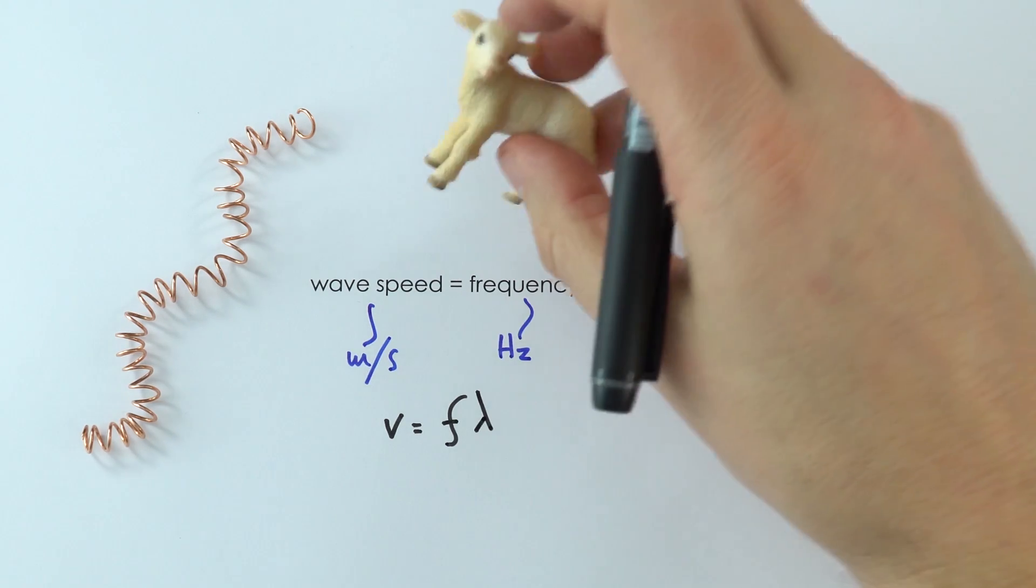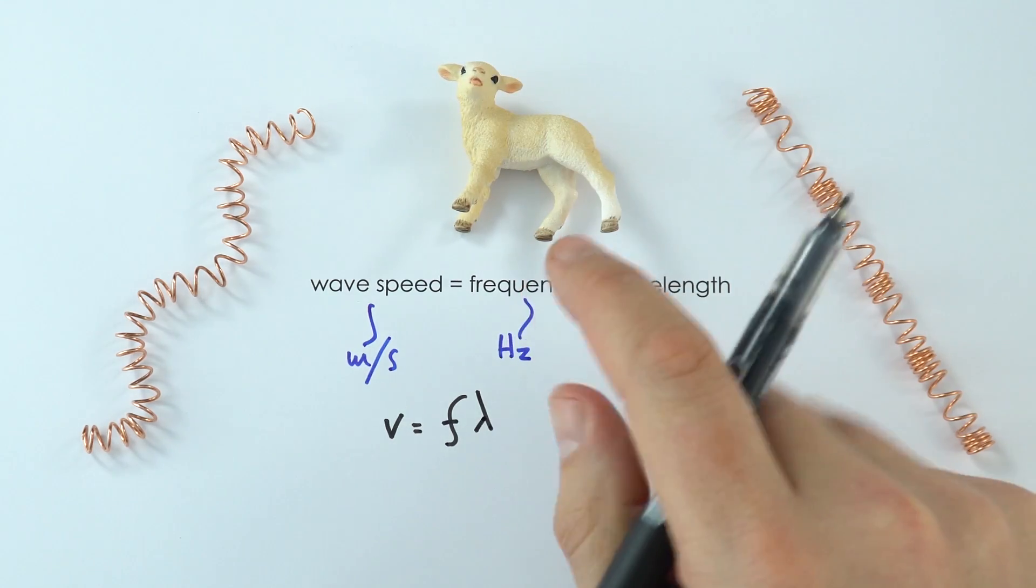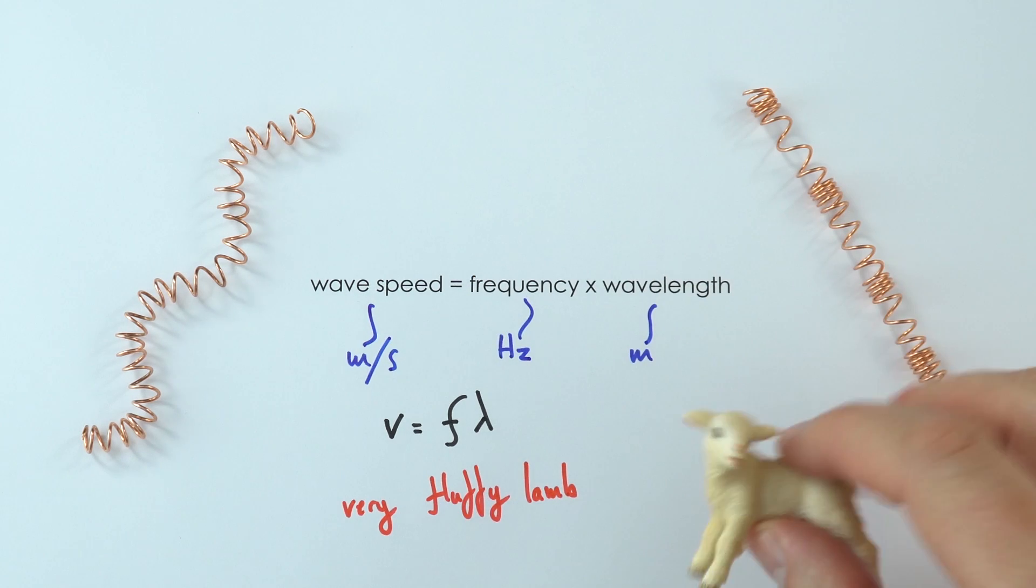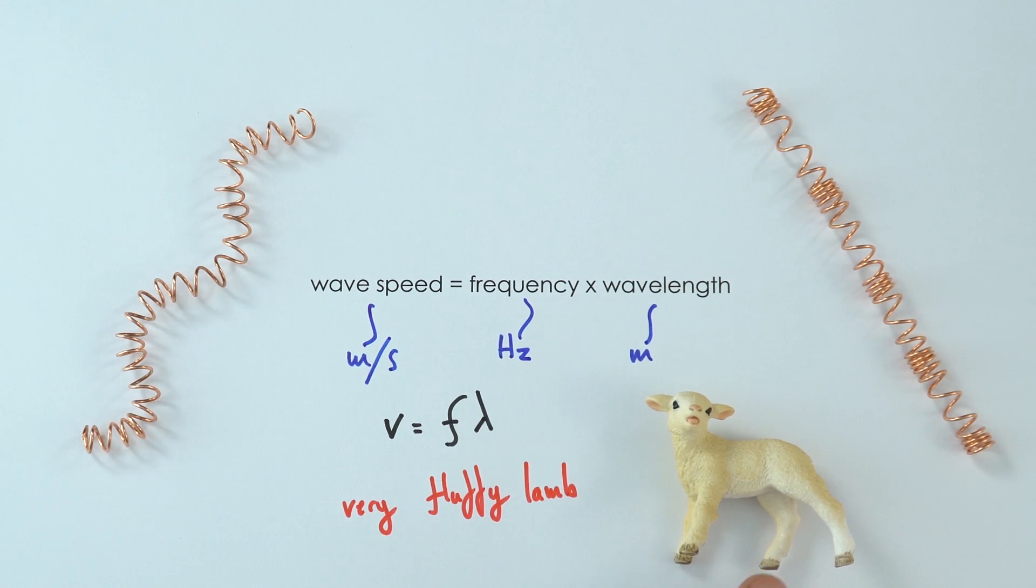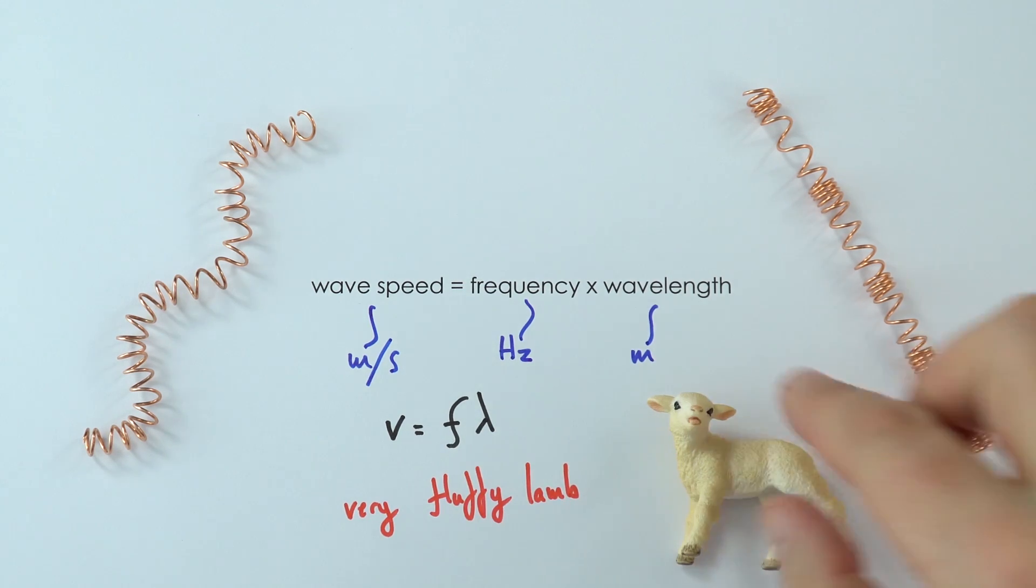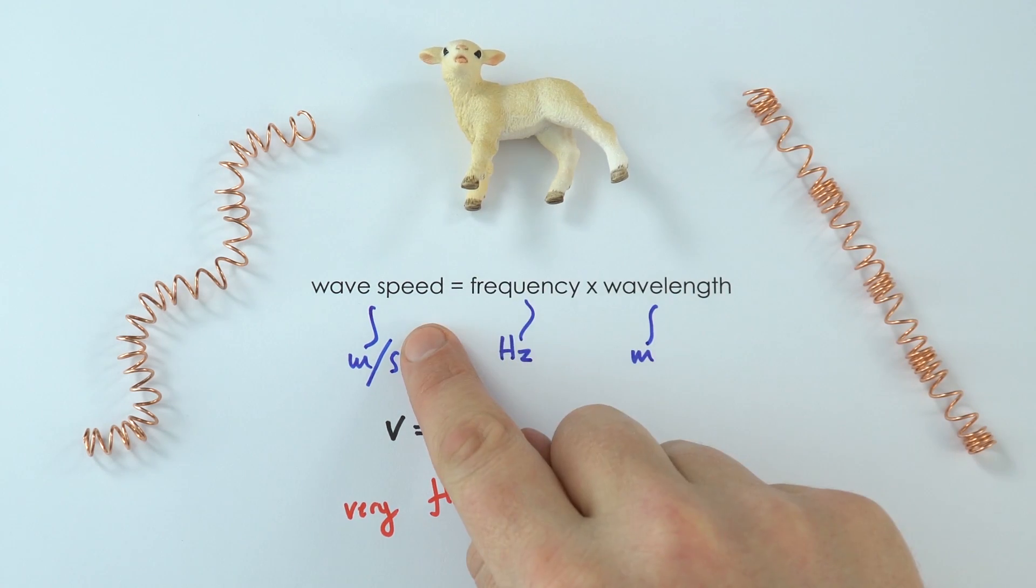And that's why I've got this thing here. What we have over here is a very fluffy lamb. And if you remember about a very fluffy lamb, this then hopefully allows you to remember v equals f lambda. Again, the kind of Greek letter lambda over here. So if you think about very fluffy lambs, you'll remember v equals f lambda, which then hopefully allows you to remember that the wave speed is equal to the frequency multiplied by the wavelength.